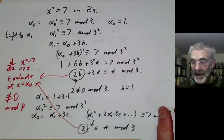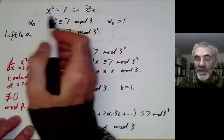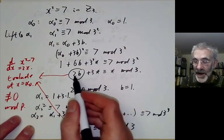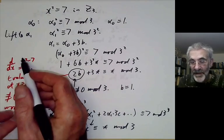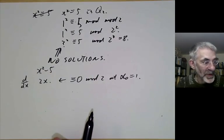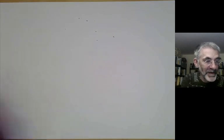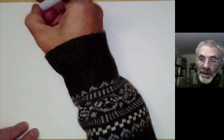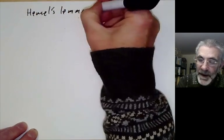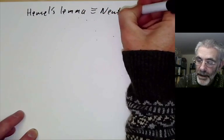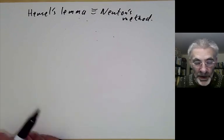We could prove Hensel's Lemma by going through this example more carefully with an arbitrary polynomial instead of x² - 7, and checking that this coefficient at each step really is the derivative of f at alpha_0. But I'm going to give a different proof. What I want to show is that Hensel's Lemma is really just Newton's method for finding roots of polynomials — at least in the special case we're talking about.